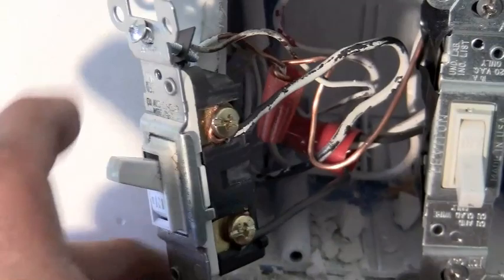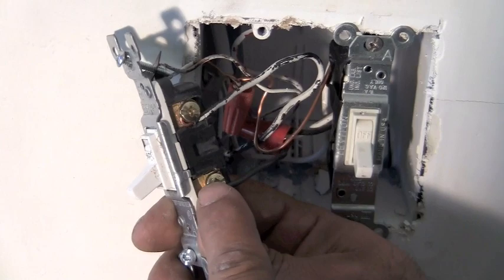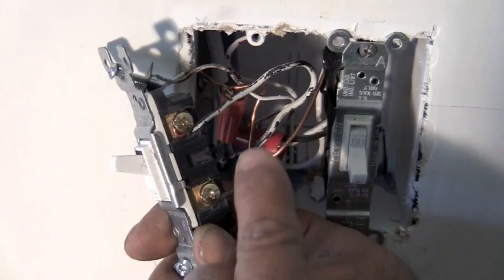So now how the switch really works, it's going to complete the circuit. Right now it's in the on position. Turn it off and now these two wires are not making connection with each other. Turn the switch on and that's all it's going to do, is make connection between this wire and that wire. That's basically how a switch works.